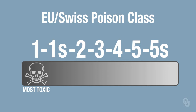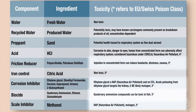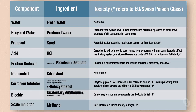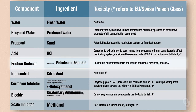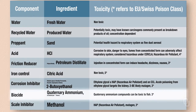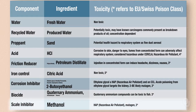A low value means the ingredient is toxic in small quantities. 3 is the lowest value in this table and is attributed to petroleum distillates, butoxyethanol, quaternary ammonium compounds, and methanol — found in friction reducers, corrosion inhibitors, biocides, and scale inhibitors.